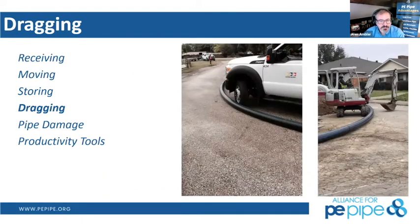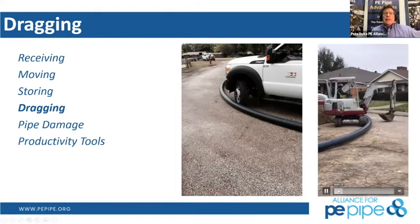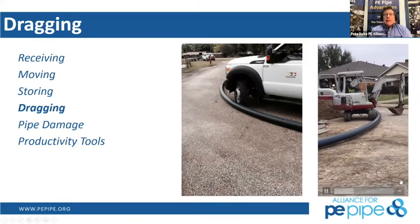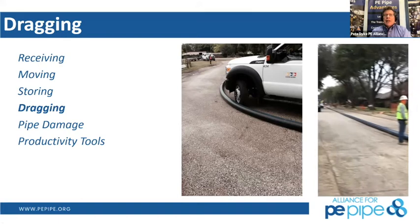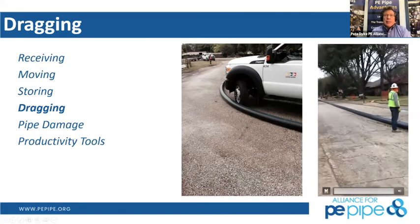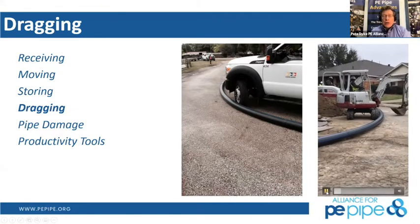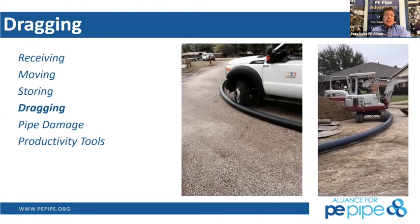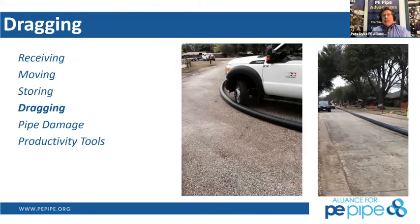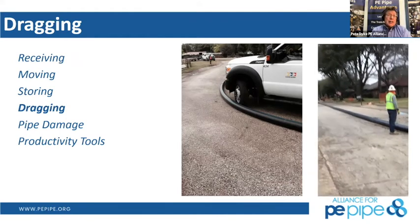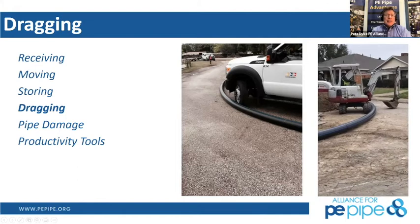Dragging the pipe is very common. One video shows a contractor outside of Dallas who didn't clean the asphalt at all and subjected the pipe to some scraping. There were a variety of things he could have done — put it on bales of hay, or use low-profile McElroy rollers — but he didn't. It was poor construction practice; however, the pipe did not exceed even 2% wall damage, and the rule allows up to 10% of wall thickness.